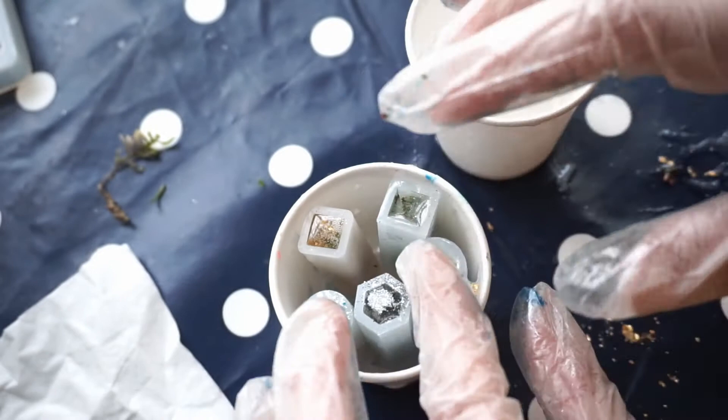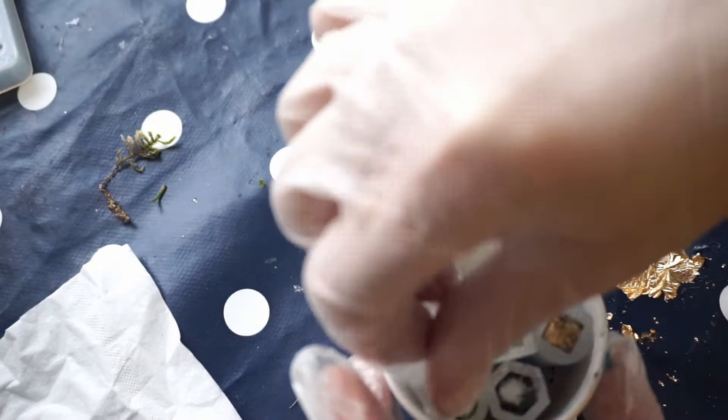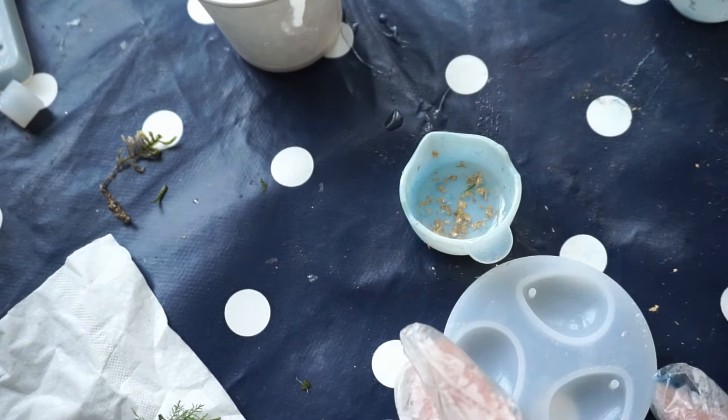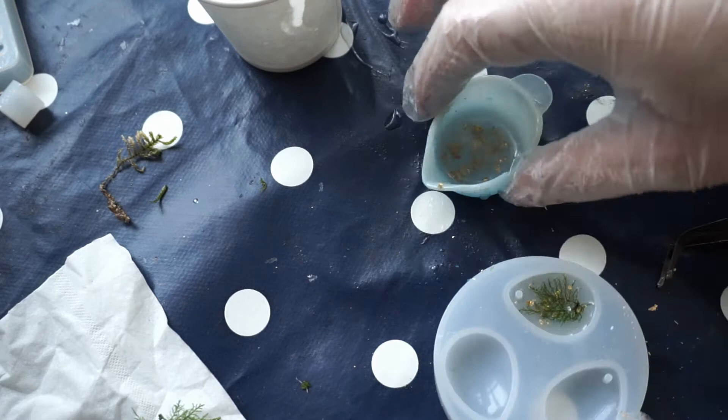One more simple item. Just drip some resin in the mold, put in some dried moss and more resin with the gold and that's it. I made also more things off the camera and we will unmold them later together.